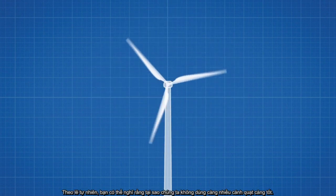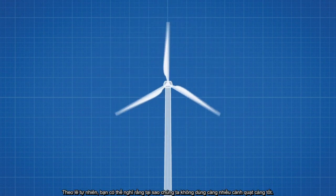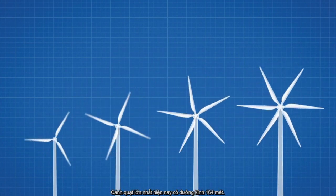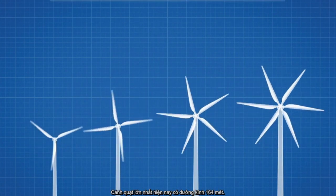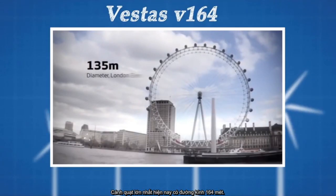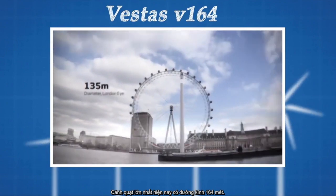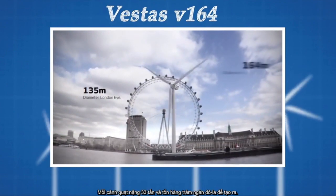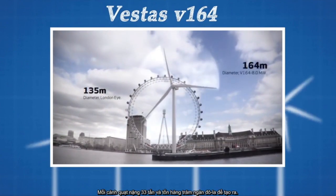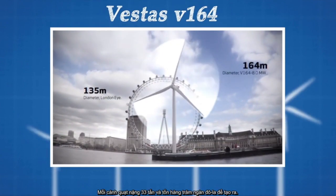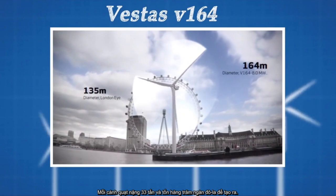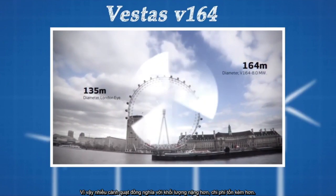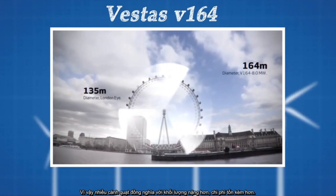So naturally you may think, why not add as many blades and make them as long as possible? The biggest wind turbine has a diameter of 164 meters. Each blade weighs 33 tons and costs hundreds of thousands of dollars to manufacture. So more blades equals more weight and more cost.